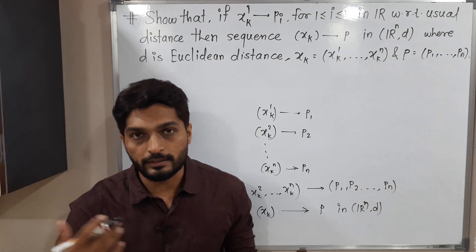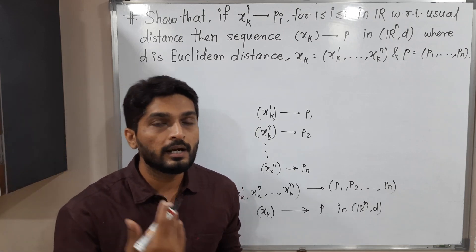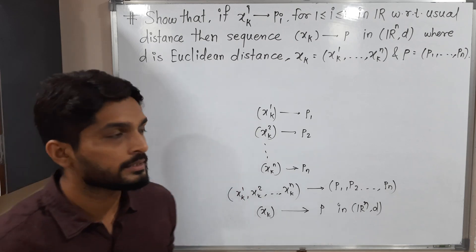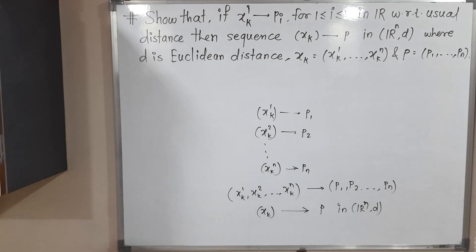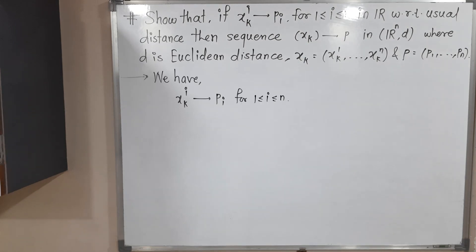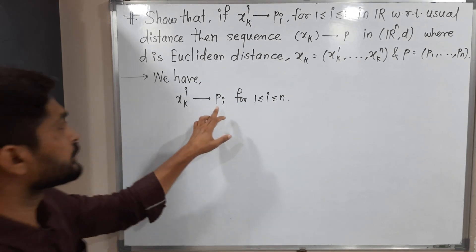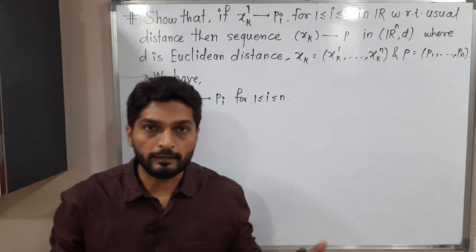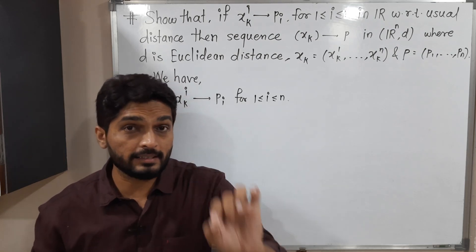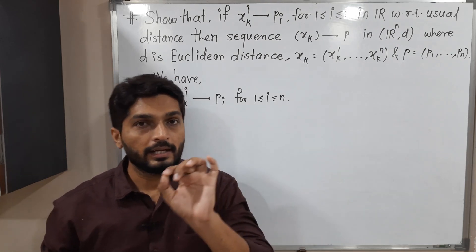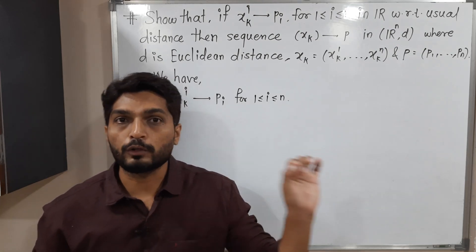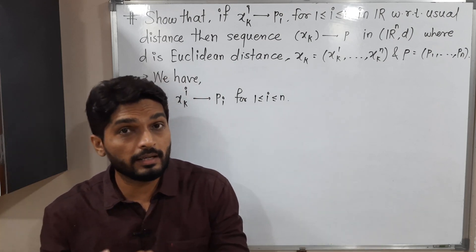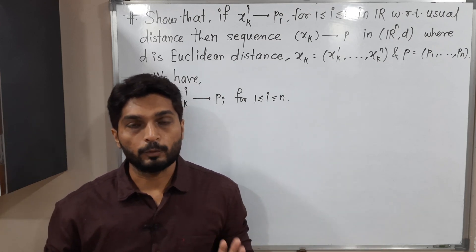The converse part we have already seen in the previous video. So let us discuss how to prove this theorem. I have written the given information here. What is the given information? That XKi converges to Pi for all i running from 1 to n. That means XK1 converges to P1, XK2 converges to P2, and so on, XKn converges to Pn.